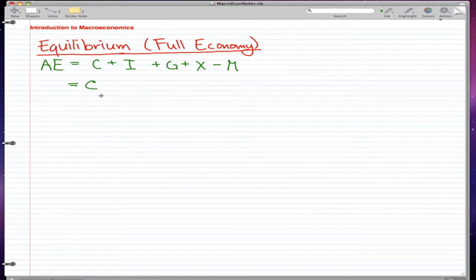So we know that C is C0 plus BYD when we fully expand it. We know that I is actually I0, we know that G is actually G0, that X is X0, and that M is little m big Y.